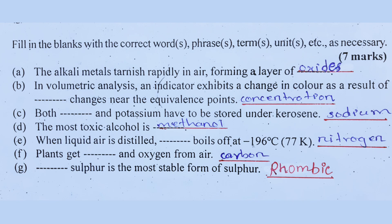Plants get carbon and oxygen from air. Number G: Rhombic sulfur — R-H-O-M-B-I-C — is the most stable form of sulfur.